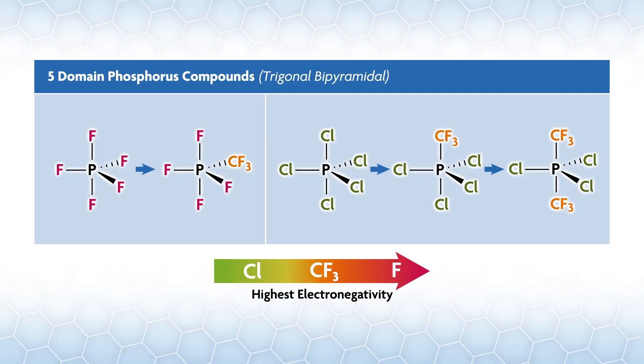Smaller groups typically prefer the axial positions, which are 90 degrees for three groups with less space. To a point, this is controlled by the electronegativity of the group, just like in the PX3 example before. For example, all of these five-domain phosphorus compounds have been prepared and structurally characterized using some method. The most electronegative group is fluorine, followed by CF3, then chlorine.